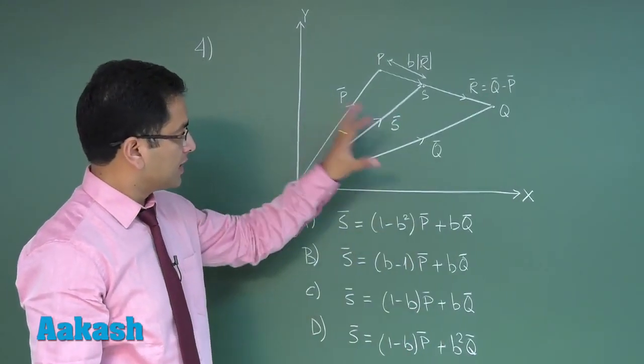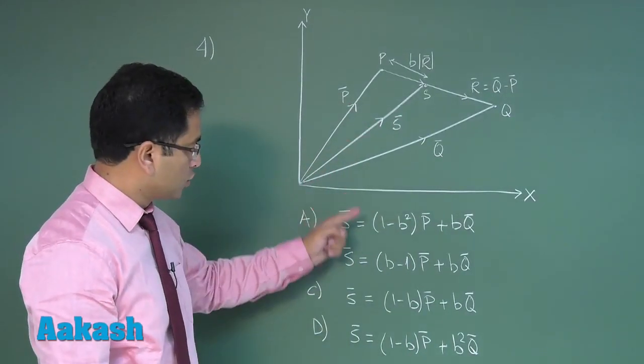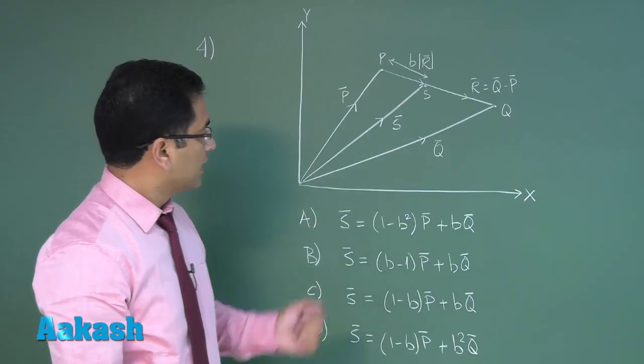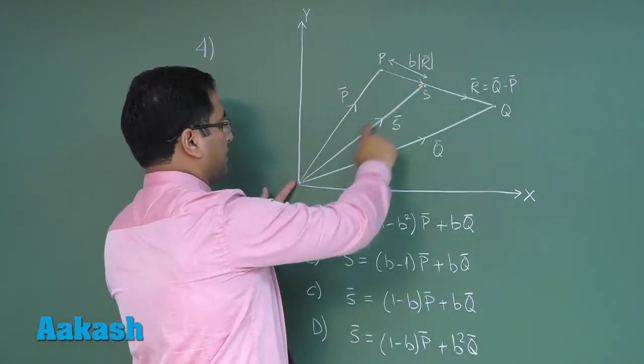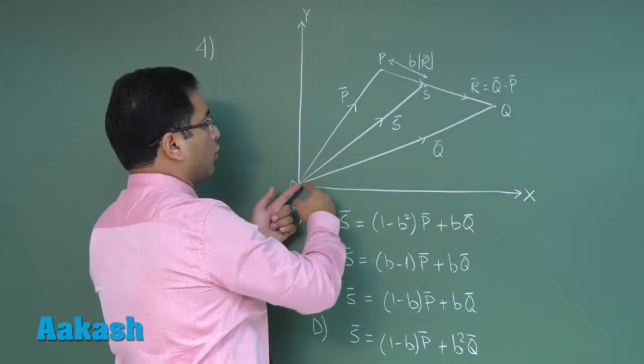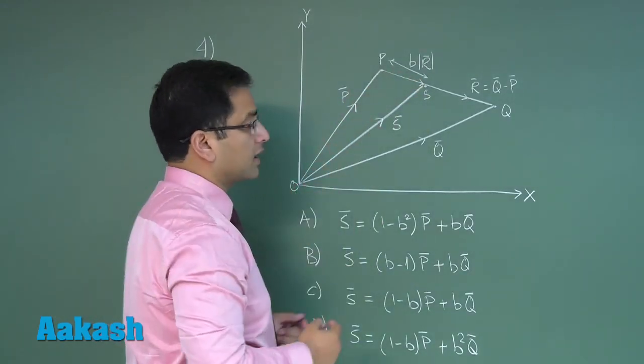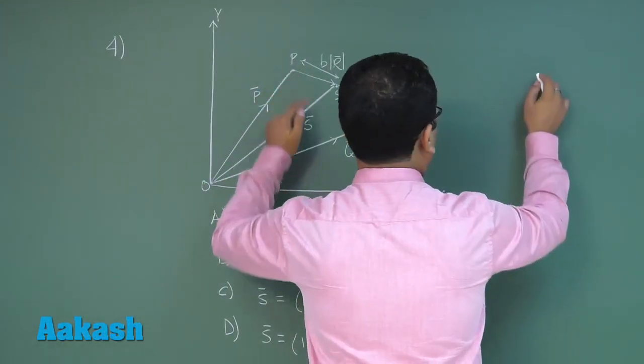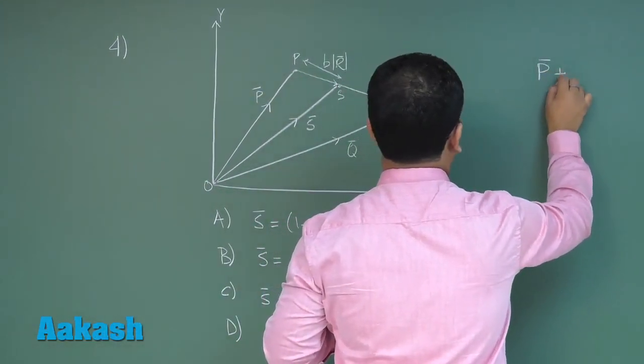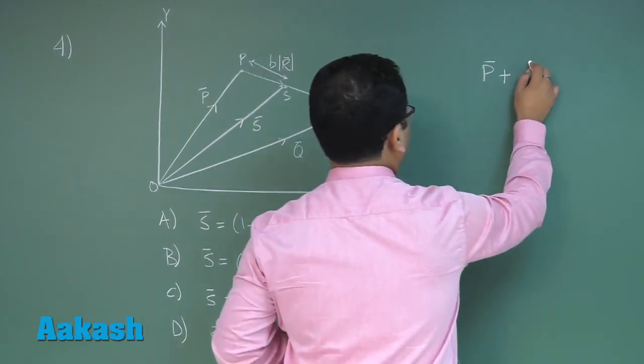On the basis of this idea, we need to choose the correct option. Let's see - if I use the triangle law of vectors in this particular triangle OPS, we'll get p vector plus this vector, that would be b r. This is the magnitude, and we need to give the direction.